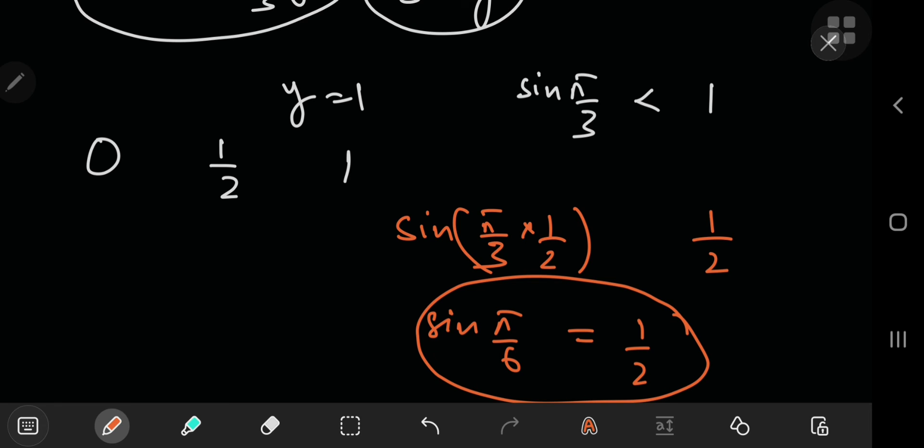And I could not believe my luck. I really could not believe my luck, and I immediately went on to Desmos and checked. I graphed y equals sin(π/3 times x) and y equals x. I immediately graphed them, and they indeed intersected at the point (0.5, 0.5).